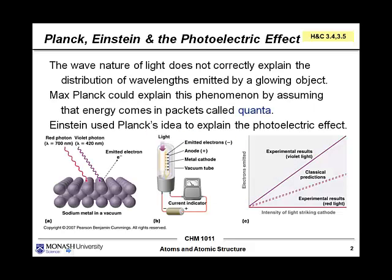The wave nature of light actually does not correctly explain the distribution of wavelengths emitted by a glowing object. This was called black body radiation. Max Planck realized that he could explain this phenomenon by assuming that energy comes in packets called quanta.